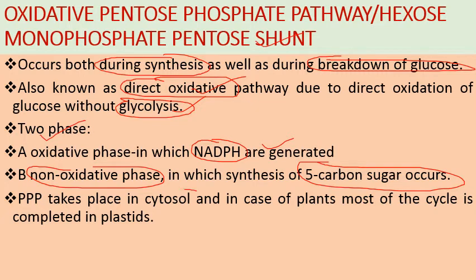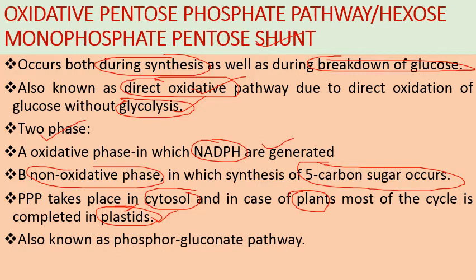The pentose phosphate pathway takes place in the cytosol of the cell. In plants, most of the cycle is completed in plastids — embryonic structures of different types based on their function, such as chloroplasts used for photosynthesis. This pathway is also called the phosphogluconate pathway because the first stable product formed is 6-phosphogluconate.